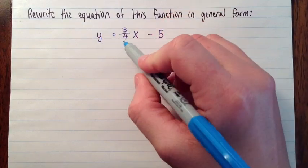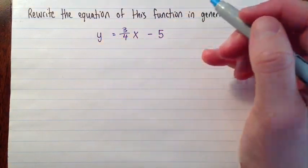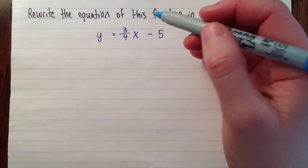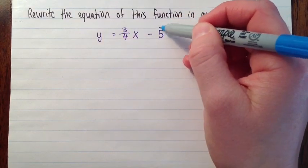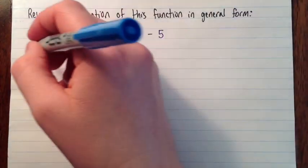So we'll do that first. The only fraction in here is 3 fourths. So if we multiply everything by 4, we'll get rid of the fractions. If you had two fractions, one for the slope and one for the y-intercept, you'd multiply by the lowest common denominator.